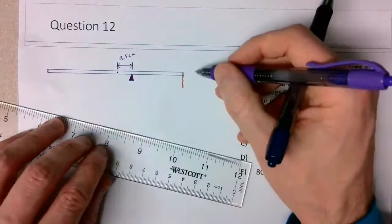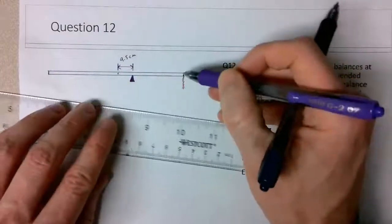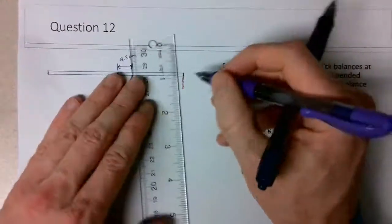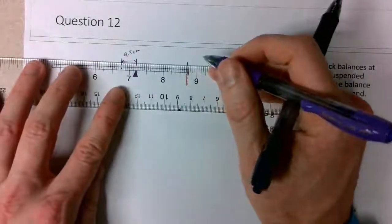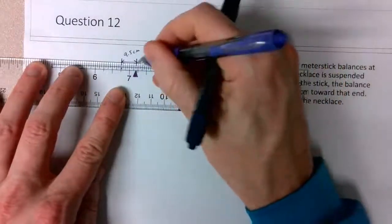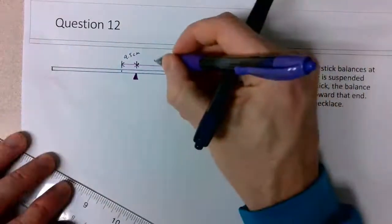And since this is a meter stick, the distance from the middle of the meter stick to the end is 50 centimeters. So I know the distance between the necklace and the new pivot point, the new center of gravity technically, is 40.5 centimeters.